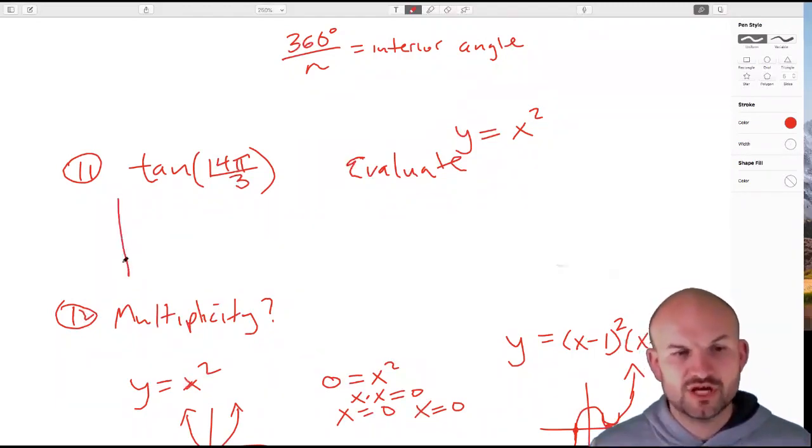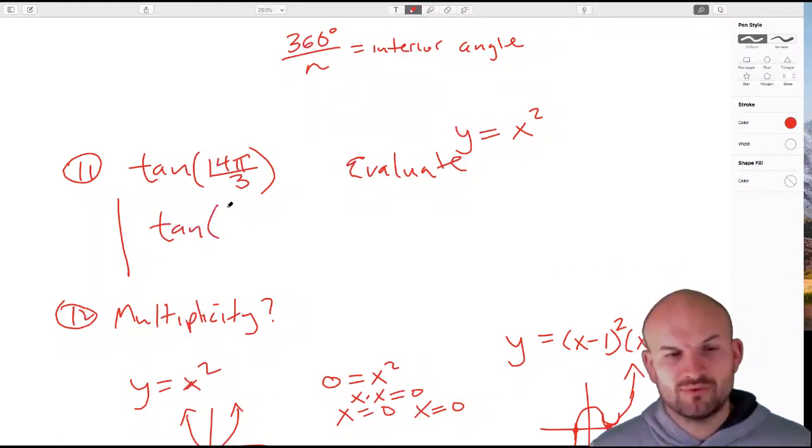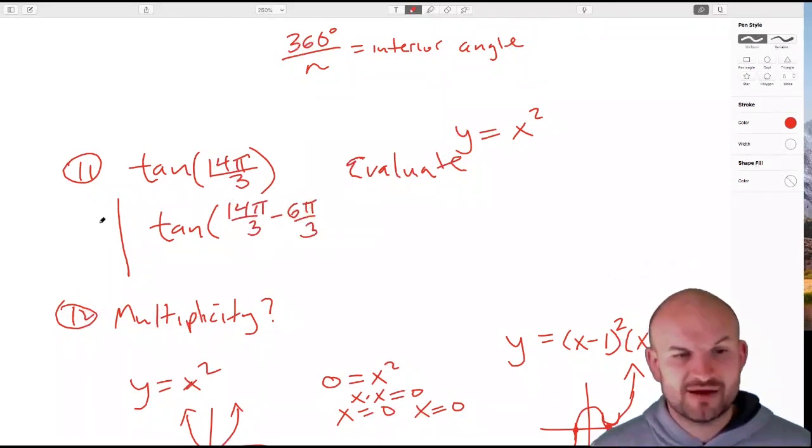What we're going to do is subtract a revolution. A revolution in terms of thirds would be 6π/3, so 14π/3 minus 6π/3. Now, 6π/3 is going all the way around the unit circle.